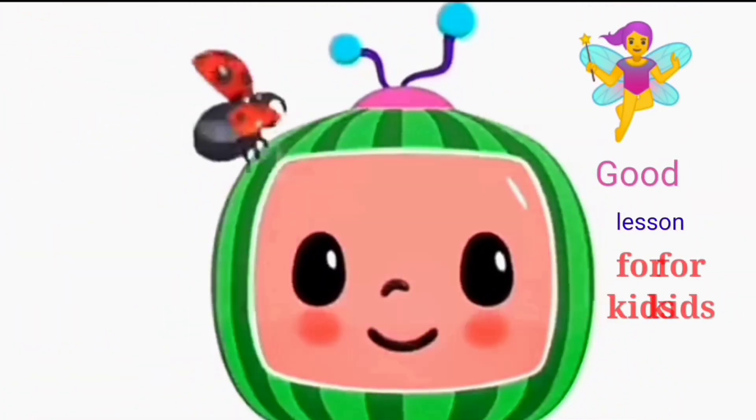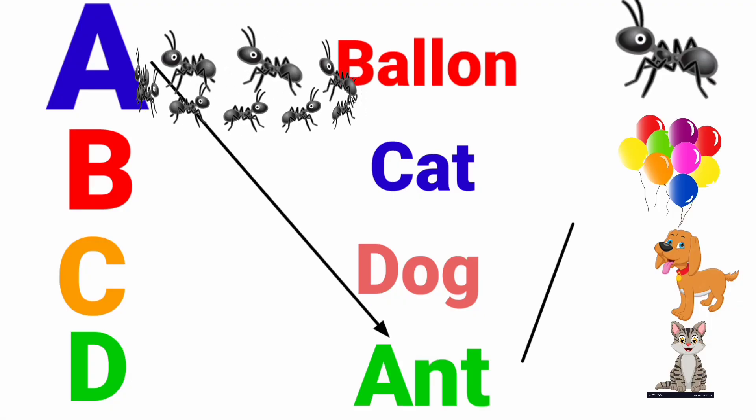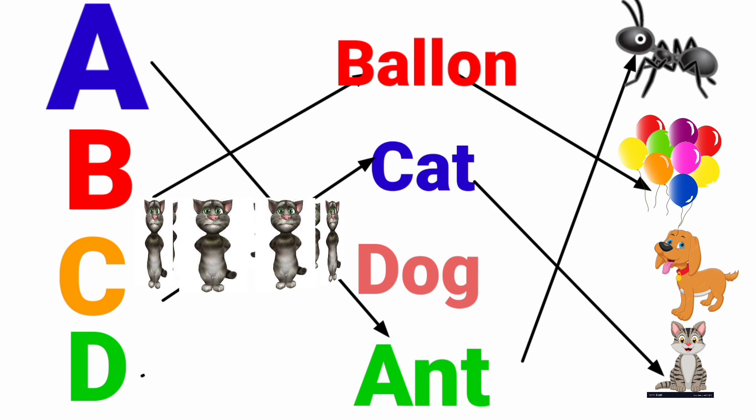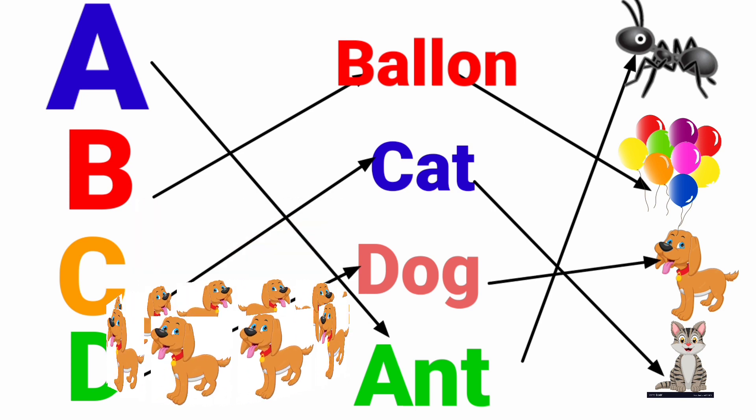Good Lesson for Kids. A for Ant. B for Balloon. C for Cat. D for Dog.